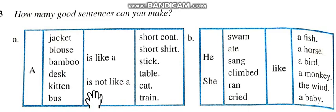A desk is not like a table. A kitten is like a cat. A kitten is not like a table. A bus is like a train. A bus is not like a table.